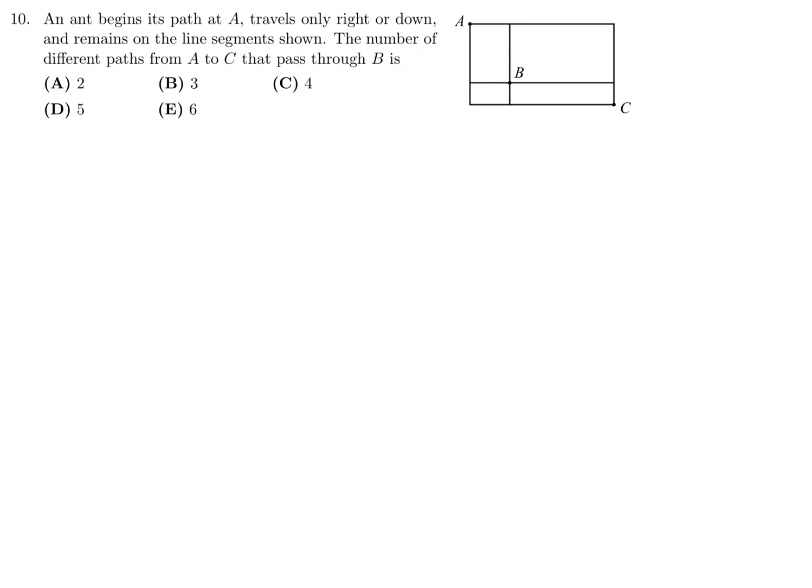An ant begins its path at A. It travels only right or down and remains on the line segments shown. The number of different paths from A to C that pass through B is... Let's count. So, we go here, then we go down, and then we go here, and then we go there. So that's one path. I can also go here and here. That gives me another path. So there's two if I go those two steps. Now, if I had gone these two steps, then I can go there and there. That gives me one path. Or I can go there and there. That would give me another path. So there was two and then another two, so that's a total of 4. Number 10, the answer is C.